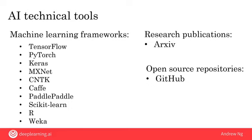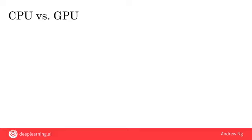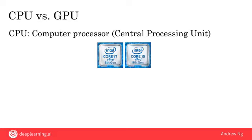In addition to these open source technical tools, you often also hear AI engineers talk about CPUs and GPUs. A CPU is the computer processor in your computer, whether it's your desktop, your laptop, or a compute server off in the cloud. CPU stands for central processing unit, and CPUs are made by Intel and AMD and a few other companies. This does a lot of the computation in your computer.